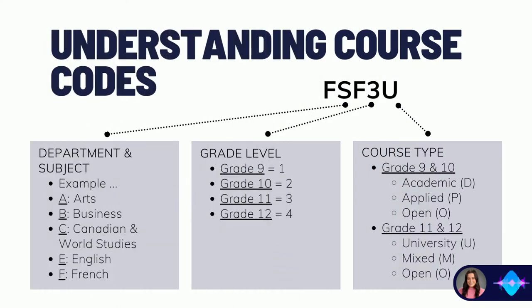Before we jump into specific course selection choices for grades 9, 10, 11, and 12, I'm going to quickly review how you can read and understand a course code, which is a really important tool in high school. The first three letters of a course code designate the subject specifically and the department it falls under. Here we can see FSF, which designates this is a course that falls under the French department.